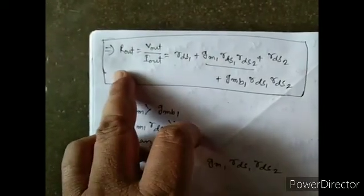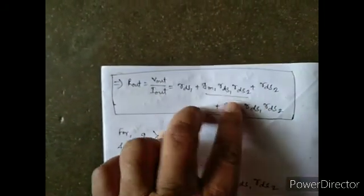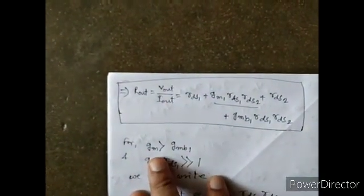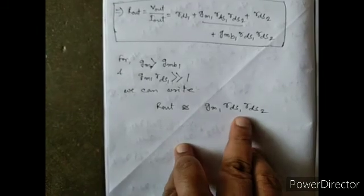After simplifying, we get the expression for Iout, and further simplification gives us Gout in terms of RDS2 and RDS1. Finally, the output resistance Rout is derived. Among the terms gm·rds1·rds2, since gm1 is greater than Gmb1 and gm1·rds1 is much greater than one, we can simplify further and write: Rout equals gm1·rds1·rds2.